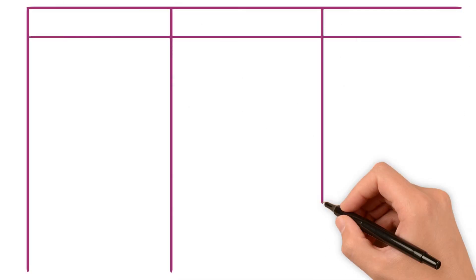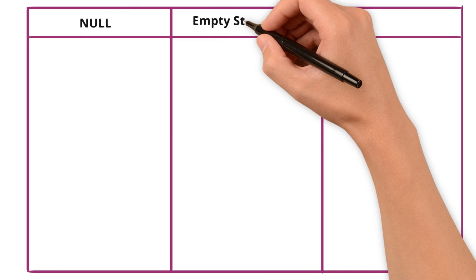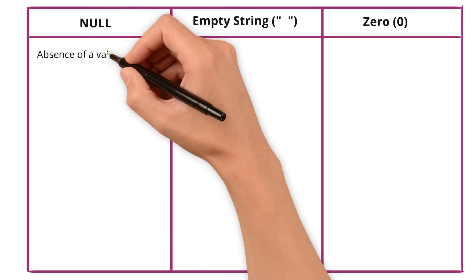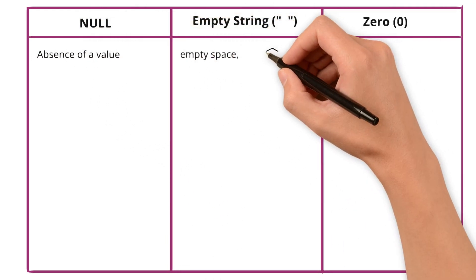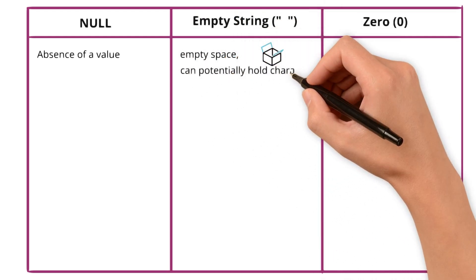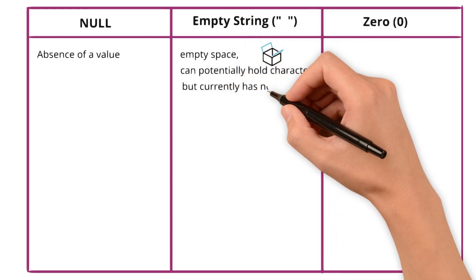Let's look at the key differences between null, empty string, and 0. Like I mentioned before, null represents absence of value. Empty string is an empty space which is like an empty box that can potentially hold characters but currently has none.